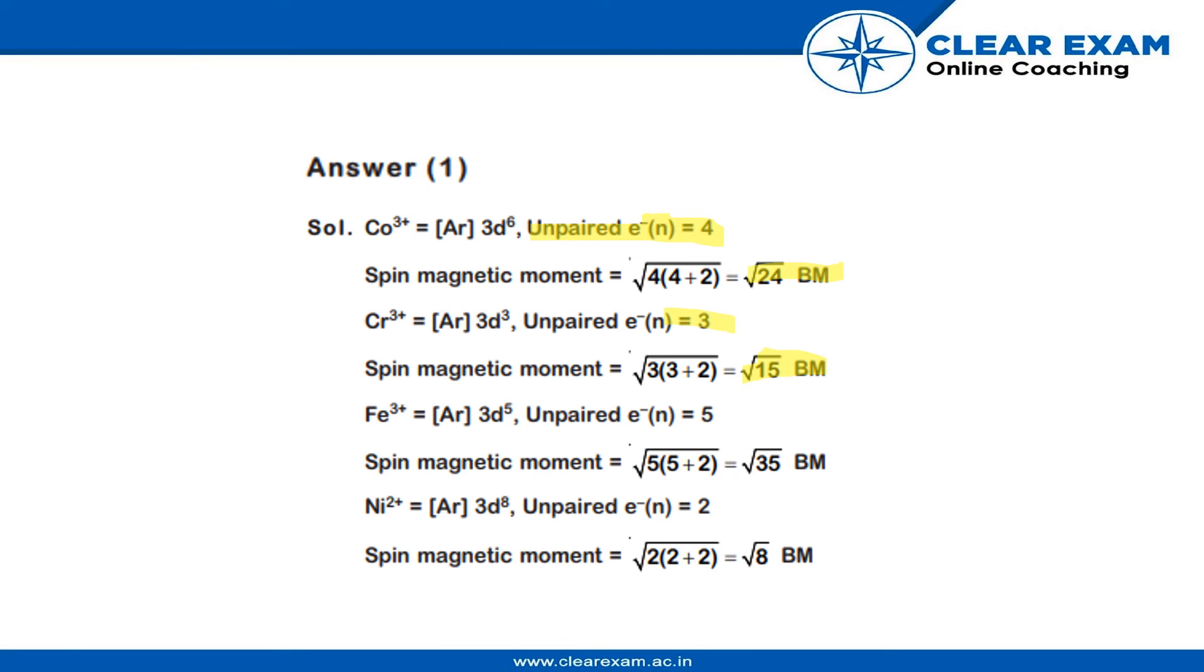For Fe3+, it is 3d5 and unpaired electrons is 5. The spin magnetic moment is √(5×7) = √35 BM for Fe3+.